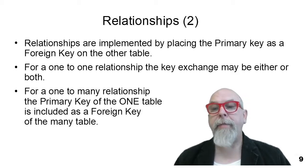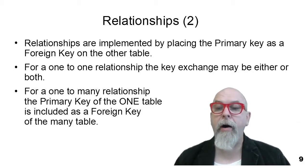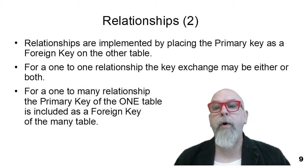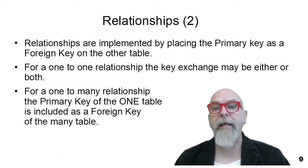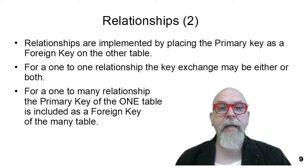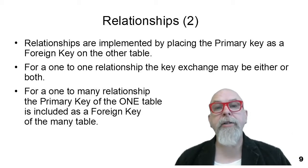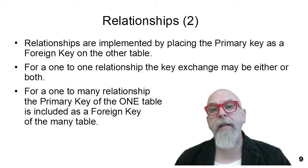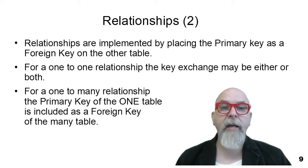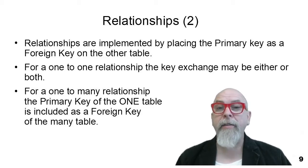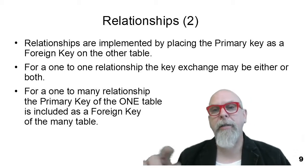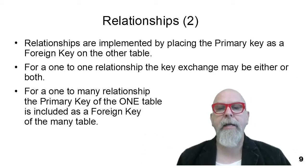Relationships are implemented by placing the primary key of one table as a foreign key on another table. In a one-to-many relationship, the primary key of the 'one' table is placed as a foreign key on the 'many' table. In a one-to-one relationship, the primary key of one of the tables is placed as a foreign key on the other table — and they may swap foreign keys and primary keys if we need to traverse that link in both directions.